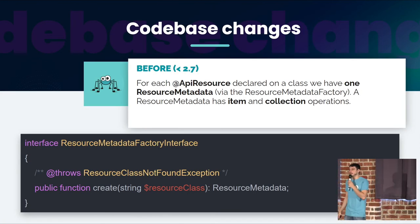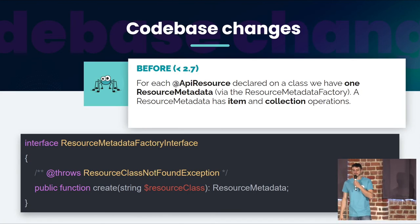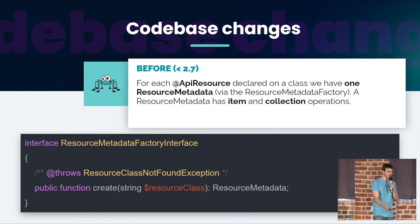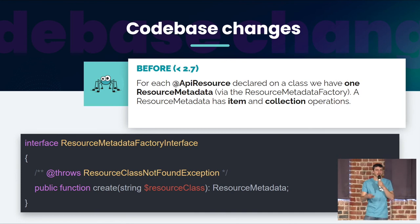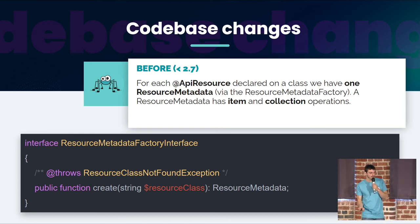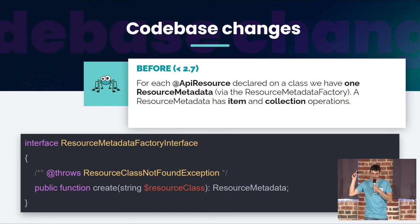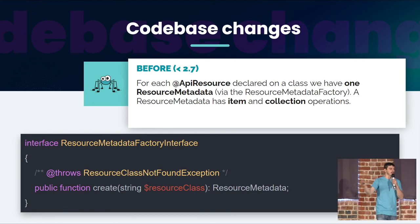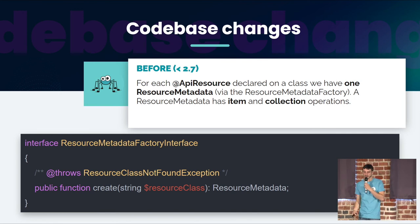So, what does this mean for the codebase? Before 2.7, in API Platform, for each resource declared on a class, we have one corresponding resource metadata, and we are using internally this interface, where we give a class and it gives the resource metadata.